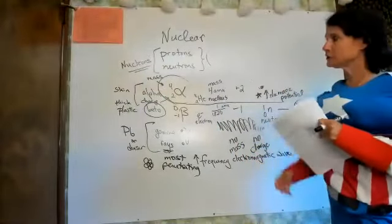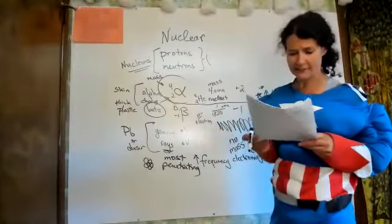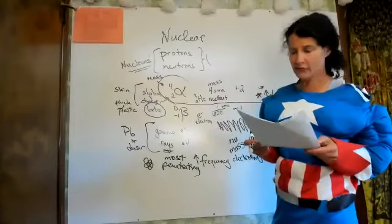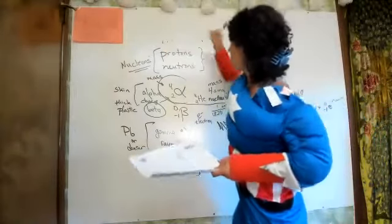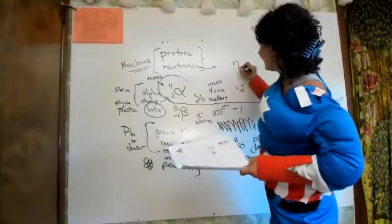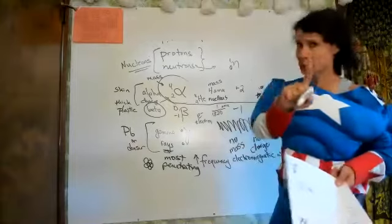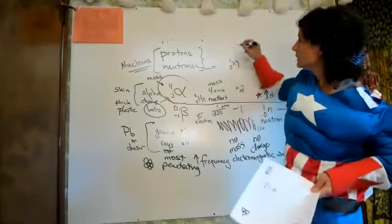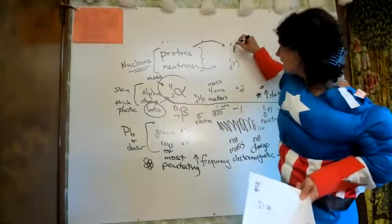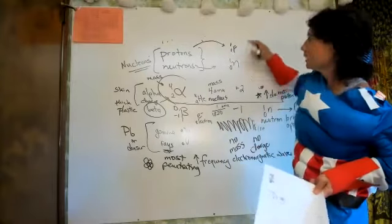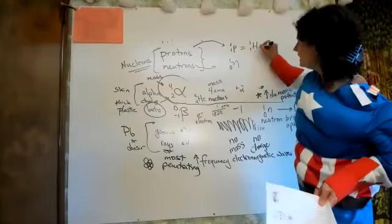The reason we do nuclear chemistry right after kinetics is because we talked about half-life. A neutron we show as a little 'n' — the charge is zero but it has a mass of one, so the symbol is 1 on top and 0 on the bottom. A proton has a mass of one and a charge of one — it is the same thing as hydrogen; a hydrogen nucleus is the same as a proton.